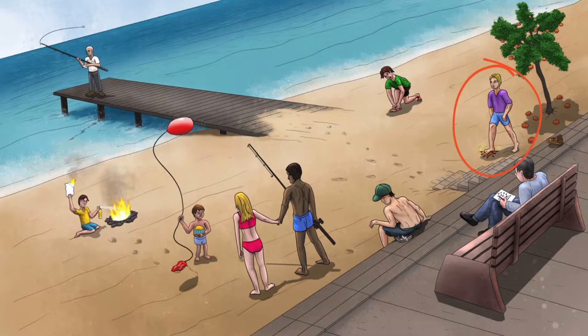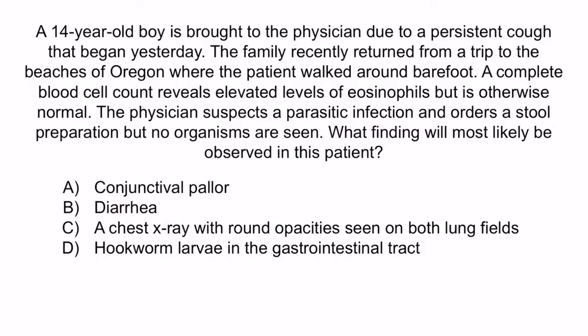During the early stages of infection, the patient may present with Loeffler syndrome. Returning to the answer choices: A, B, and D are all tempting because hookworms can cause any of these. However, this patient's cough only started yesterday and his stool sample is negative, so the pathogen hasn't yet descended into the gastrointestinal tract. Anemia would be unlikely as the pathogen hasn't had enough time to cause gastrointestinal bleeding. Diarrhea and hookworm larvae in the GI tract would also be unlikely because the pathogen is only in the lungs and trachea at this point. So B and D are incorrect as well.